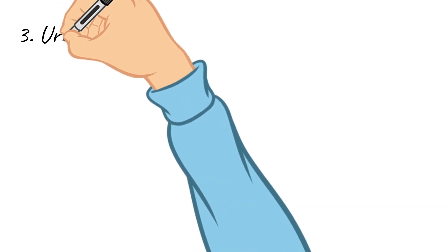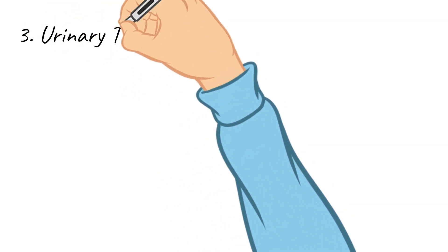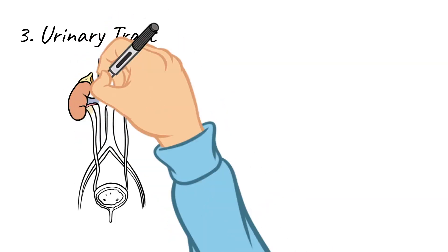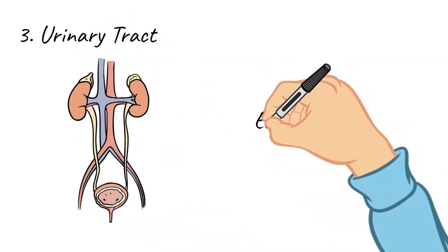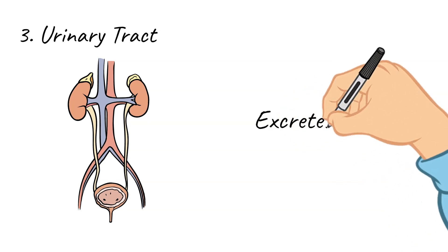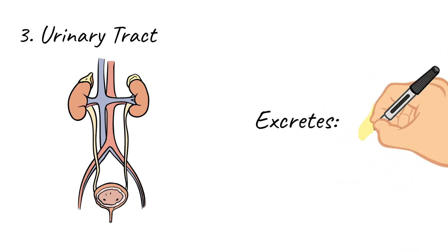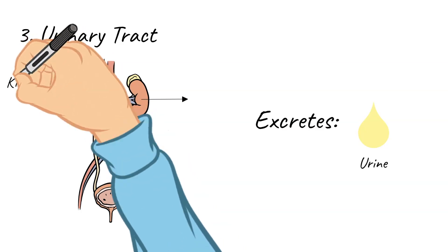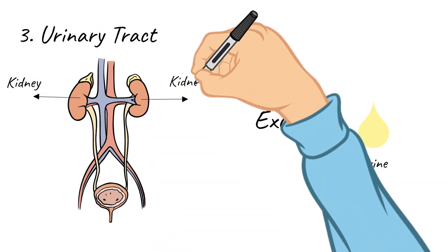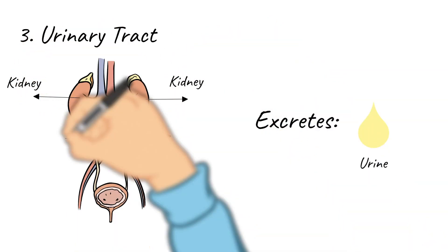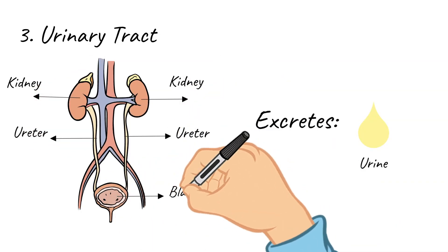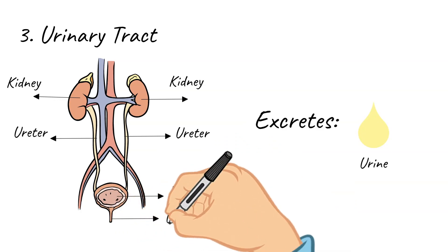The next part of the excretory system we need to talk about is the urinary tract. The urinary tract is made up of several parts and it is what your body uses to excrete urine, which is extra fluid as well as waste. The urinary tract includes two kidneys, two ureters, a bladder, and a urethra.